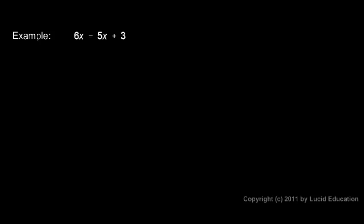Here's another example that's similar. 6x equals 5x plus 3. Well, I need to get x all by itself. Right now, x exists in two places, on the left and on the right, so I need to get rid of it in one of those places.